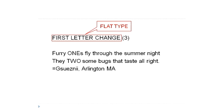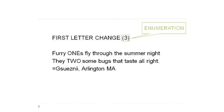So what's the number three after the flat type? That is called the enumeration, and it tells you how many letters are in each answer word. Since it's a first letter change, both words have the same number of letters. In this case, three.